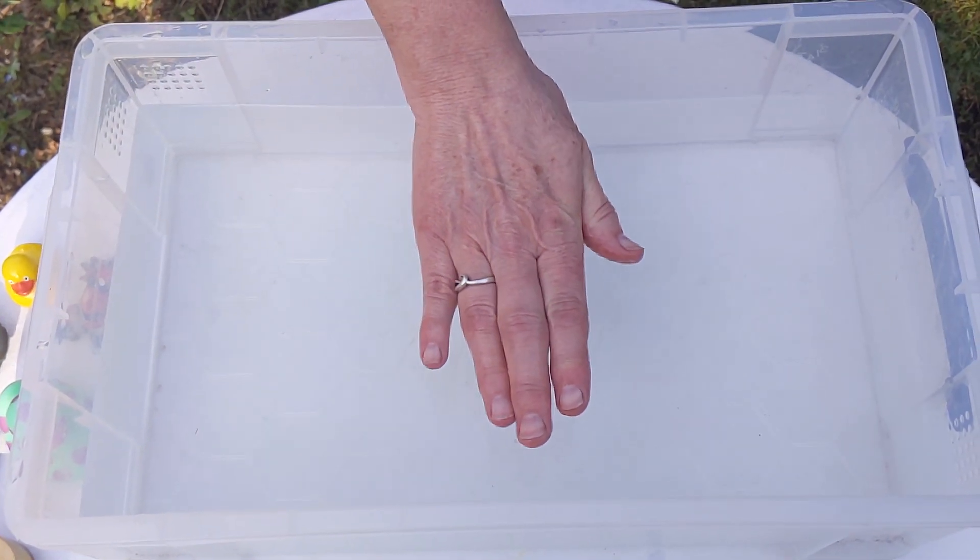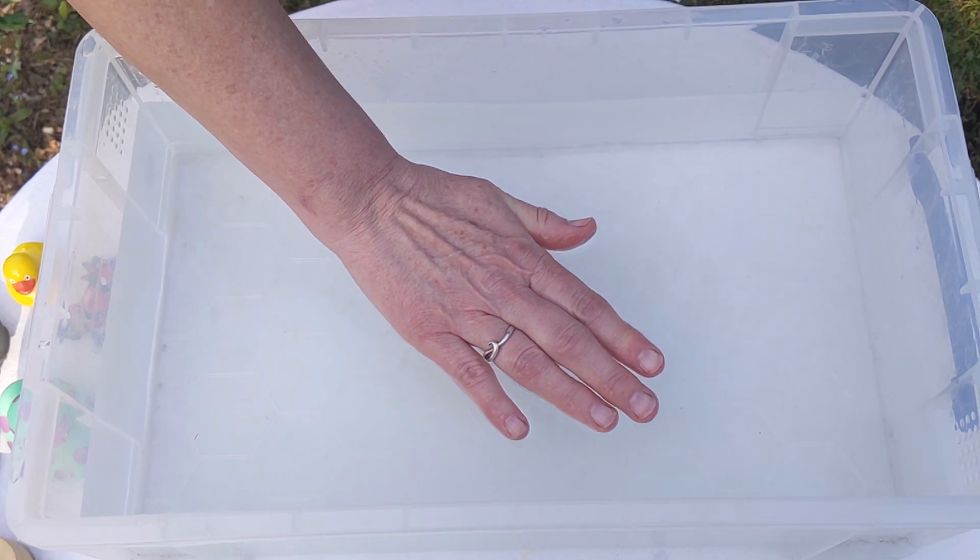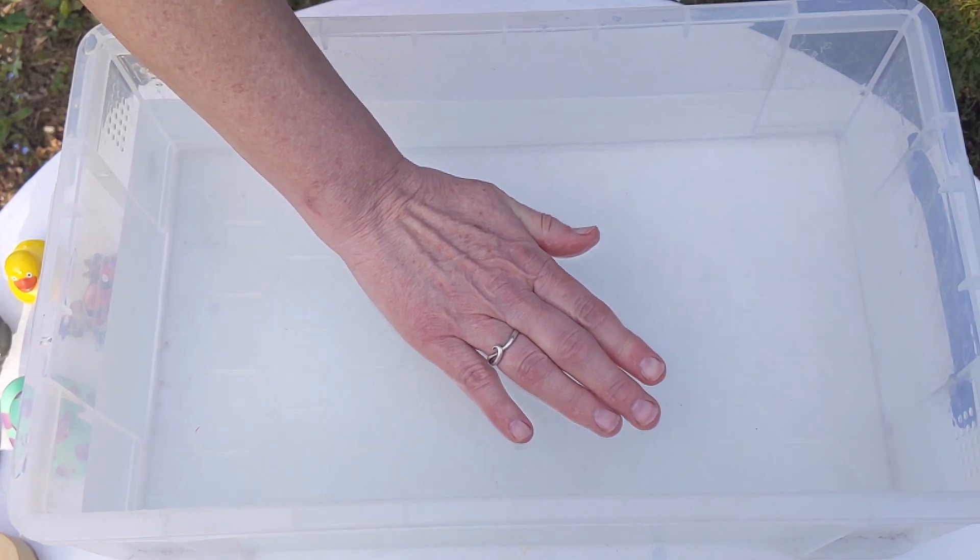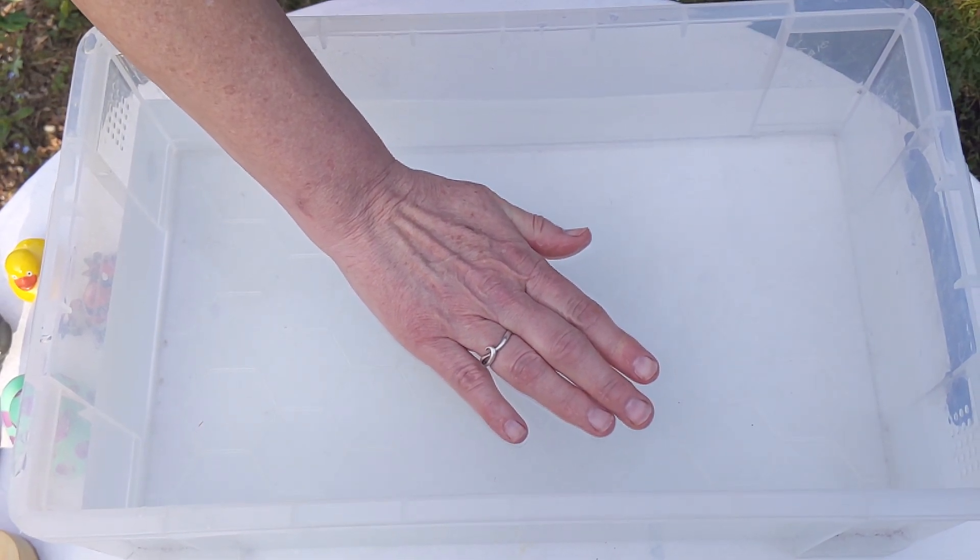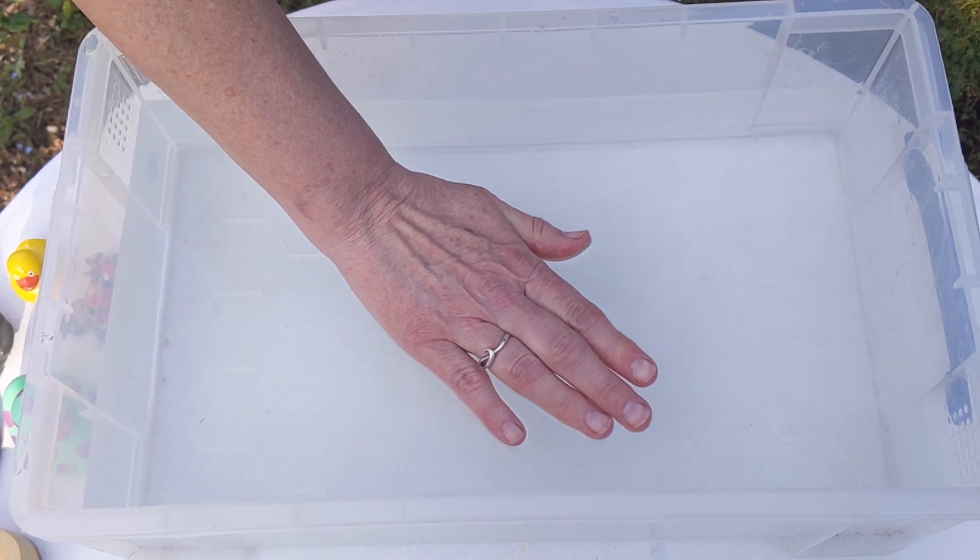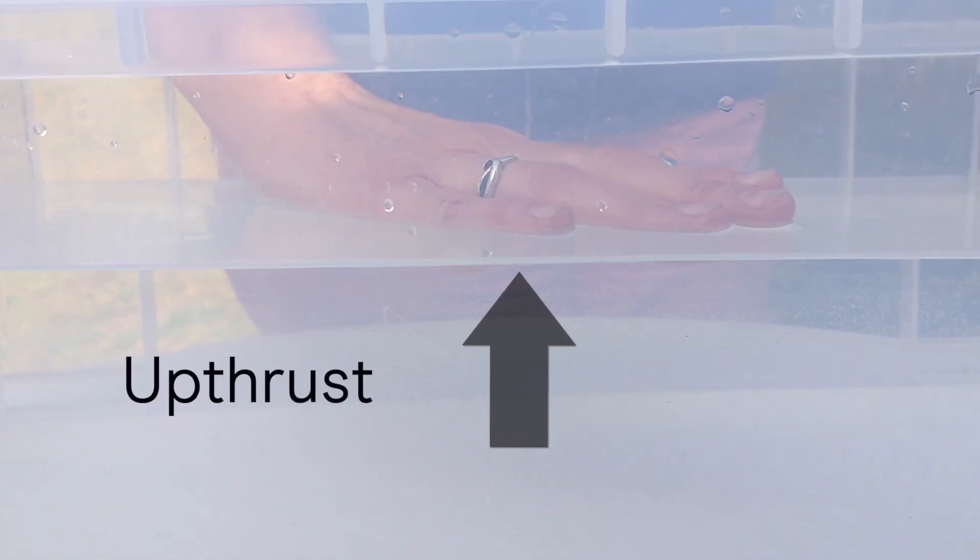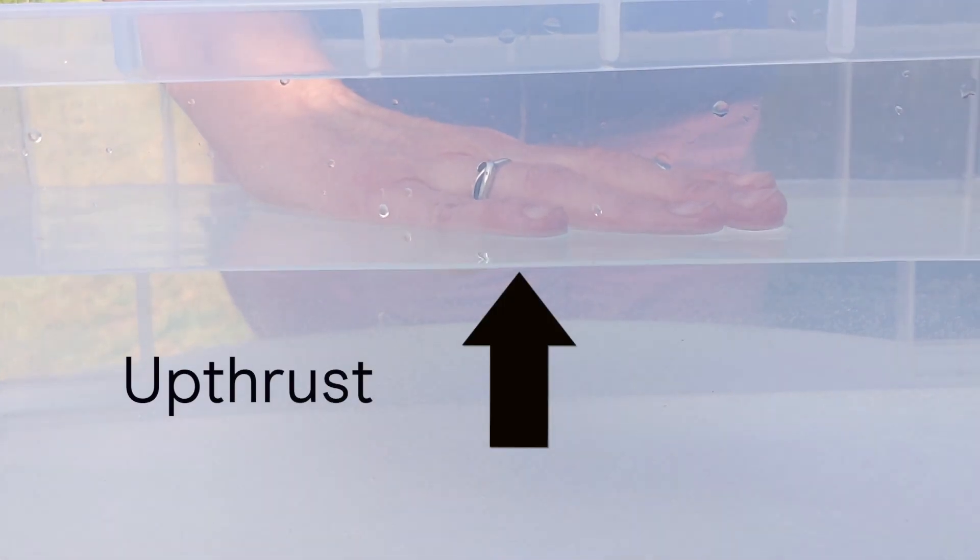Take your hand and close your fingers together like this. Now place your hand on the surface of the water and gently push down. Can you feel a force pushing up against your hand? This force is called upthrust and it's the force that helps things to float.